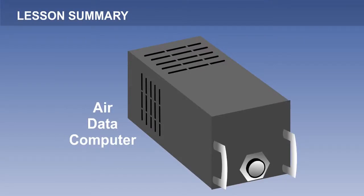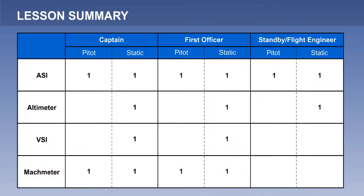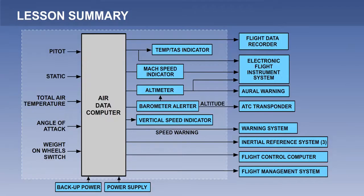Let's summarise this lesson. In response to the problem of increasing complexity of pitostatic piping in the multi-crew aircraft of the late 50s, early analogue air data computers were developed. From the 1980s onwards, these were superseded by digital air data computers, which are now fitted to all modern airliners.